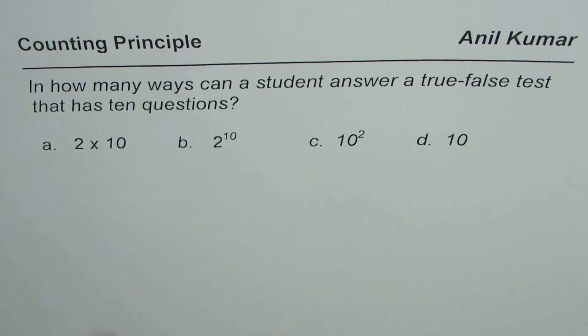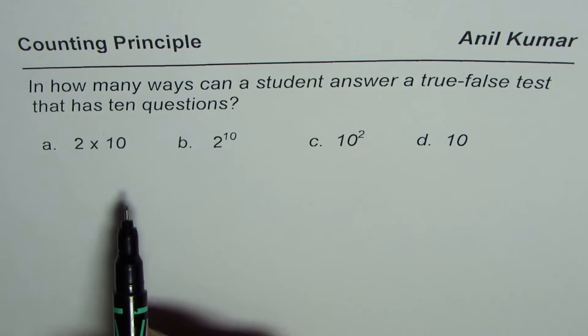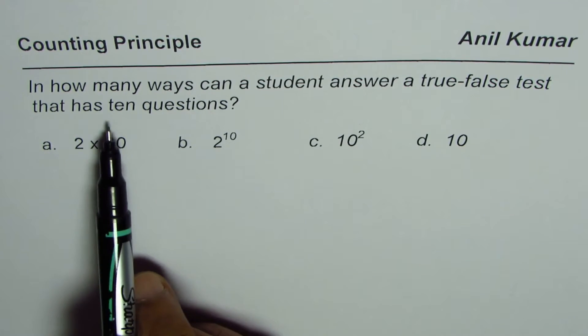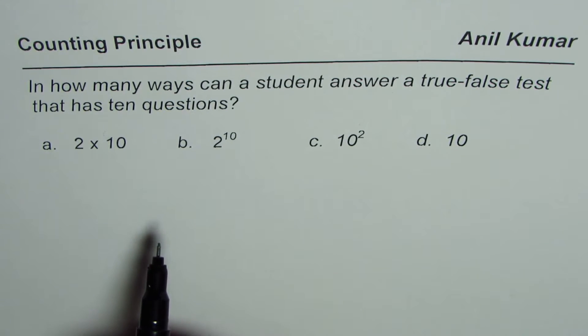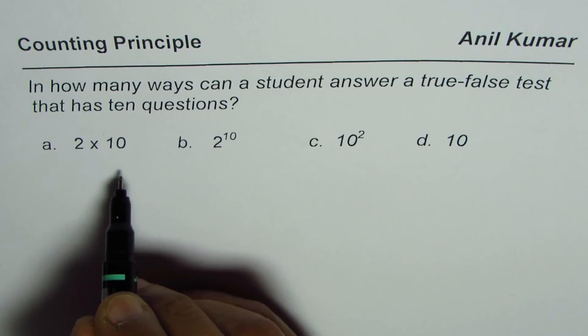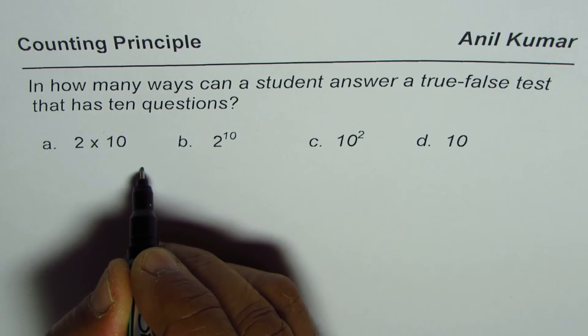or false. These are the two options. So there are two options, true or false, and there are ten questions. So applying the fundamental or multiplicative counting principle, we know for every question there are two options, will be two